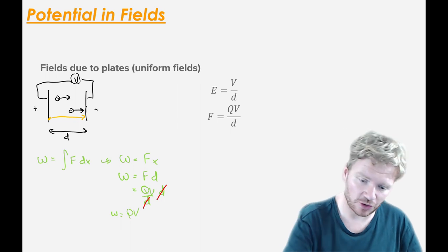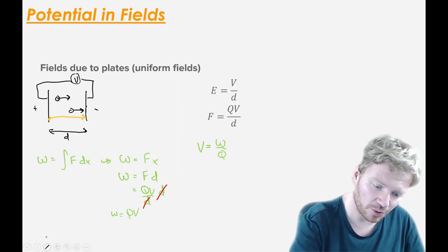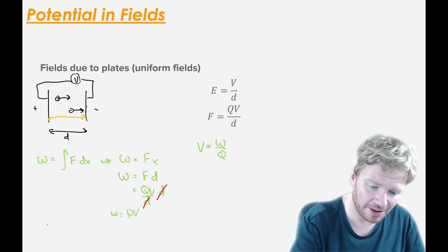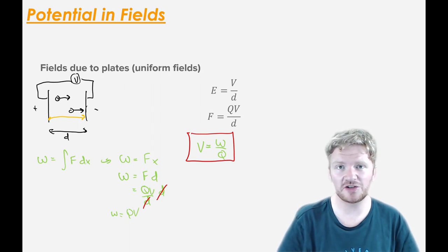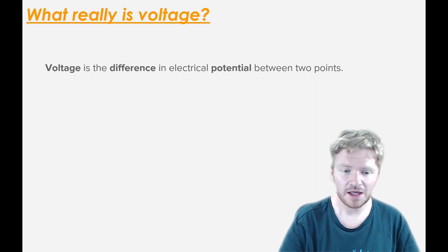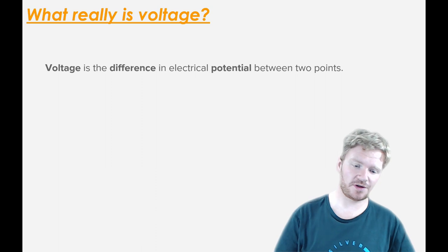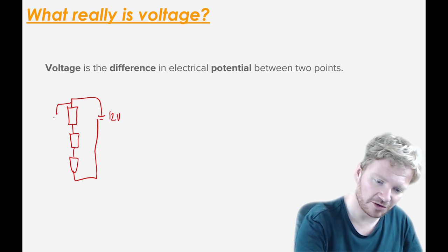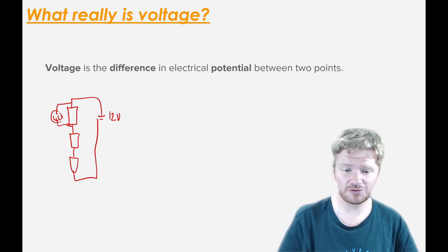That is actually where we get our definition of what voltage is: voltage is the work done per coulomb of charge. If you remember back to GCSE, that is even the GCSE definition — voltage or potential difference is the work done per coulomb of charge. So really, what is voltage? We can think of it as the difference in electrical potential between two points. If a simple circuit has three identical resistors and a 12-volt supply, between those points we have four joules of energy for every coulomb of charge — that's really all potential difference is.